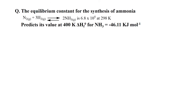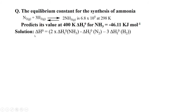Now we have to see problems based on this concept. The first problem is the equilibrium constant for the synthesis of ammonia. This is the given reaction: N2 gas combined with H2 gas to form ammonia. The equilibrium constant is 6.8 × 10⁵ at 298 Kelvin. We have to predict its value at 400 Kelvin. Delta H naught of formation for ammonia is given as minus 46.11 kJ per mole.